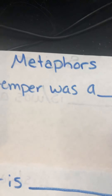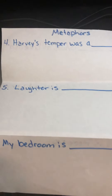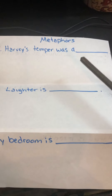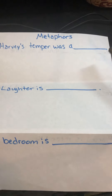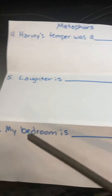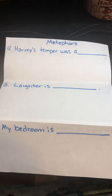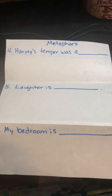And the back side, we're going to do metaphors — so there will be no words like or as. The first one says 'Harvey's temper was a...' — compare his temper to something explosive or scary. 'Laughter is...' — think of something funny. 'My bedroom is...' — maybe something messy. That's the side for metaphors. Notice we did not use like or as; we used was or is, no like or as. And that's a metaphor and a simile — that's what we're doing for our paper today.